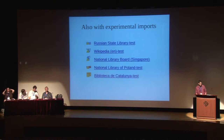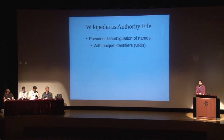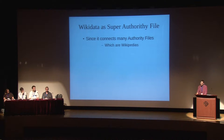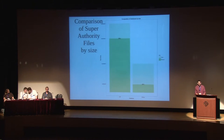Wikipedia became an experimental import about two years ago in VIAF. Wikipedia itself can be considered an authority file because it disambiguates different names and provides unique IDs for people. If you allow that Wikipedia is an authority file, then Wikidata is actually a super authority file, because it connects many authority files — with those sub-authority files being the various Wikipedias. So let's look at the battle of the super authority files.